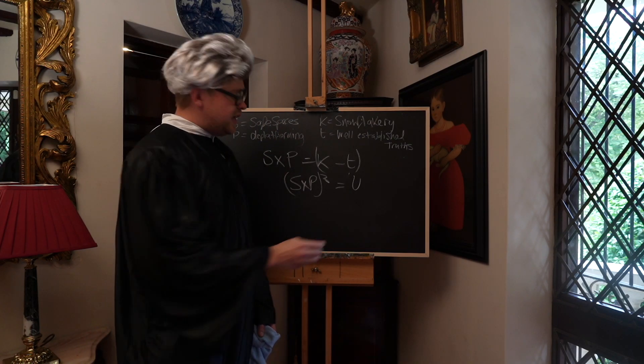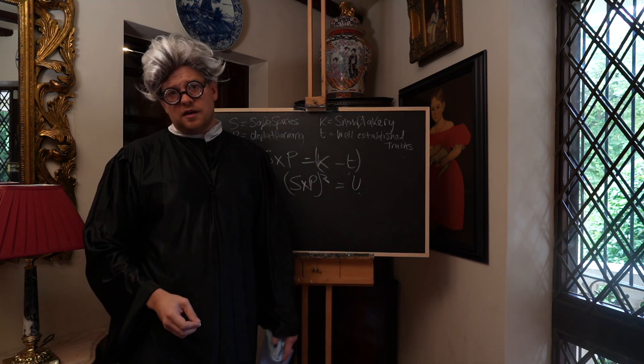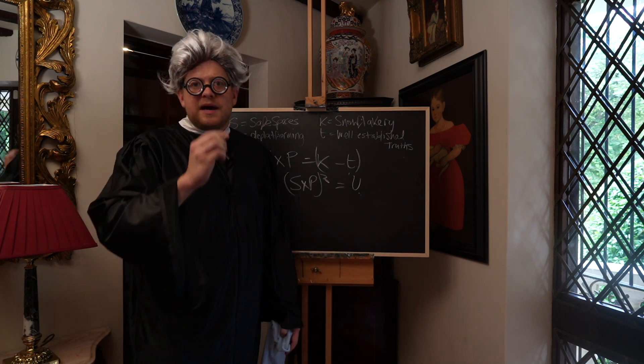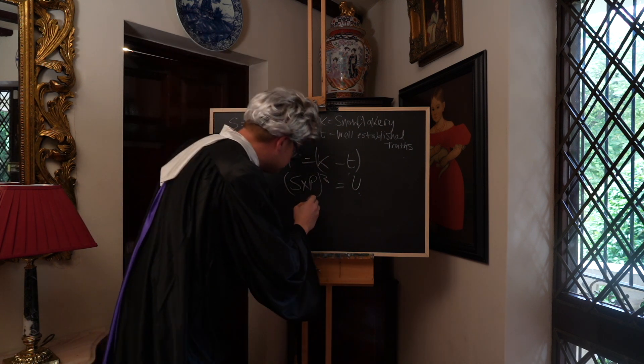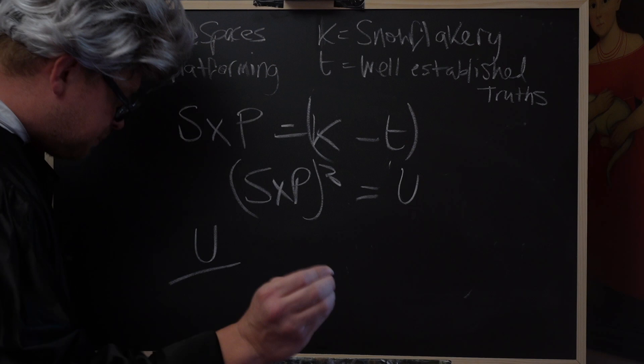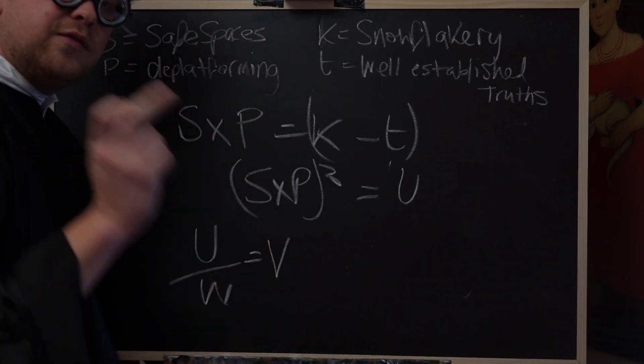Now, many of you are quite possibly experiencing the reality of this phenomena as we speak. However, let us at least take a little bit of joy in the mathematics behind the mayhem. Once we have this variable U, an unsafe environment for the rest of us, you can divide by W, wokism, and it will equal V, violence.